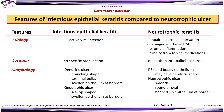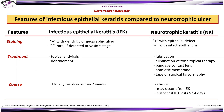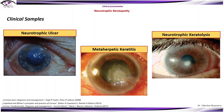This slide presents features of infectious epithelial keratitis compared to neurotrophic ulcer, based on etiology, location, morphology, staining, treatment, and course. Infectious epithelial keratitis typically resolves within two weeks, compared to neurotrophic keratitis which can be chronic and may also occur after infectious epithelial keratitis. When infectious epithelial keratitis lasts more than 14 days, neurotrophic keratitis should already be suspected.